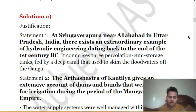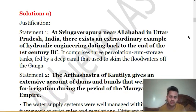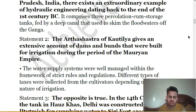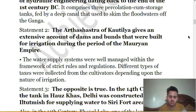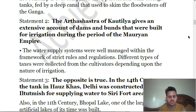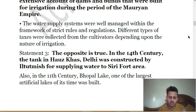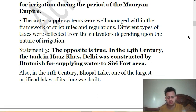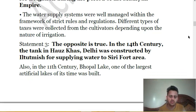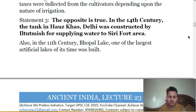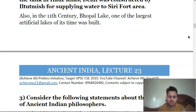Shringaverapura near Allahabad, UP, presents an extraordinary example of hydraulic engineering dating back to the end of the 1st century BC. The Arthashastra of Kautilya gives an extensive account of dams and bunds built for irrigation during the Mauryan Empire. Iltutmish built Hauz-i-Khas, which was constructed for supplying water to the Siri Fort area. Also, in the 11th century, Bhopal Lake, one of the largest artificial lakes of its time, was built.